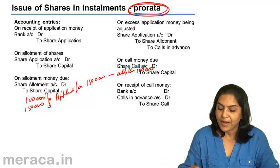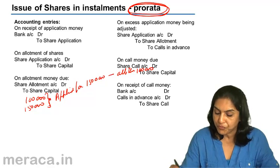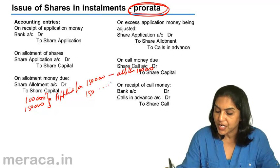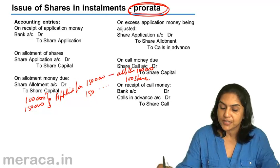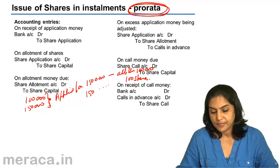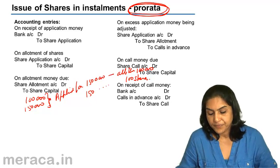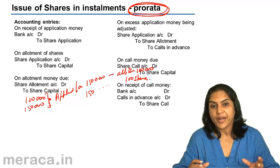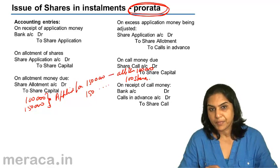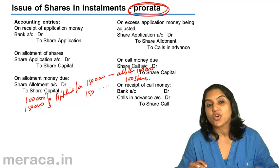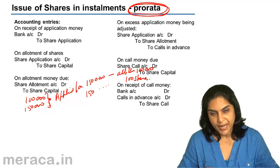So if you actually applied for 150 shares, you would be allotted 100 shares. When there is a pro-rata allotment, that means you are allotted some shares, but not all of the shares that you applied for.